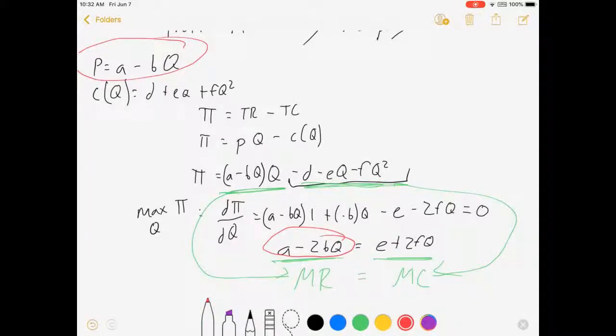That comes because of this product rule, and it will always happen with the linear slope.